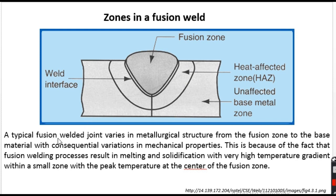This typical fusion welded joint varies in metallurgical structure — the microstructure of the material varies from the fusion zone all the way to the unaffected base metal zone. This heat affected zone is quite important and is itself comprised of three more zones. Since the microstructure is varying, the final mechanical property also varies.